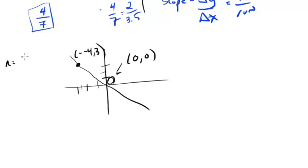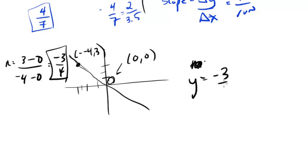The slope is 3 minus 0 over negative 4 minus 0, so negative 3/4. This time we have a negative slope, so it's running this way. In this case, y equals negative 3/4 x. What's the y-intercept? Well, it goes through 0, 0, so the y-intercept is 0. That is the equation for this line.